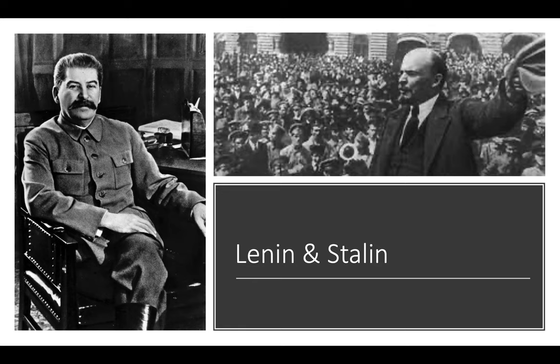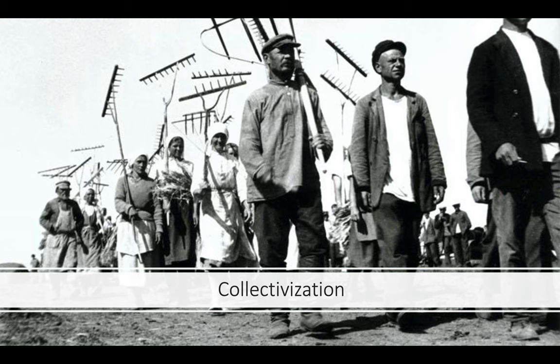In 1924, the leader of the Russian Revolution — also called the Bolshevik Revolution — Vladimir Lenin, died of a brain hemorrhage at the age of 54. By 1928, Stalin had established himself as the next Soviet leader. Stalin instituted a flurry of changes. One of his first acts was to abolish Lenin's economic policy, NEP. His new policies can be placed into three primary categories: collectivization, industrialization, and cultural revolution.